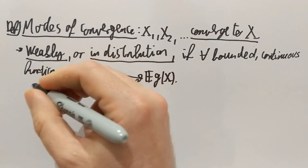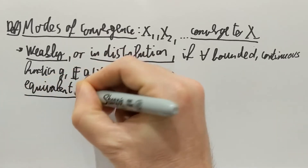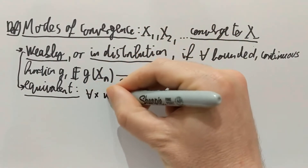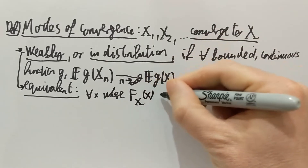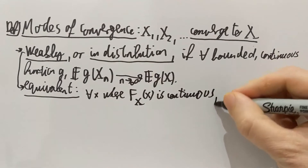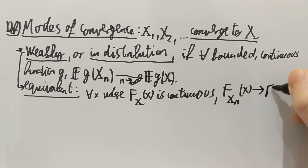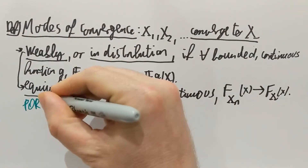A remark here: equivalent to weak convergence is that for every x where the distribution function of the limiting random variable is continuous — for every point of continuity of the limiting distribution function — we have that the distribution function of the nth random variable converges to the distribution function of this limiting random variable. These two statements are equivalent; I'm not going to show that. If you want to check how it's done, you can take a look at Portmanteau's theorem, which I'm not covering in this unit.